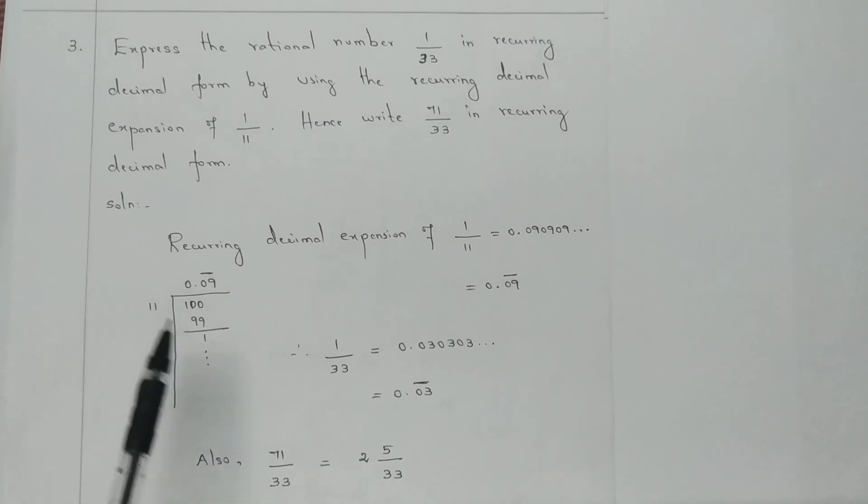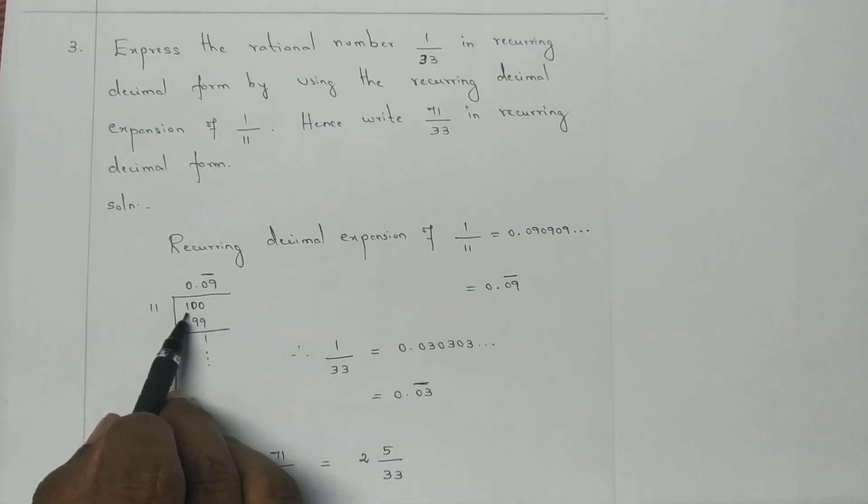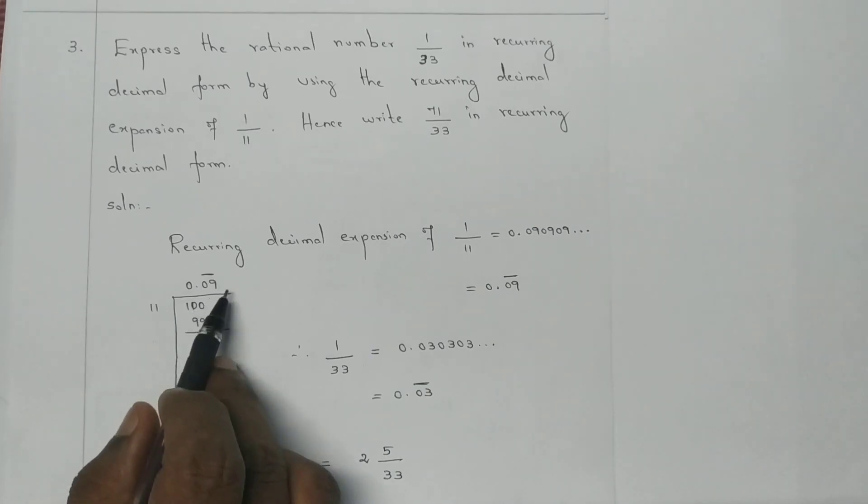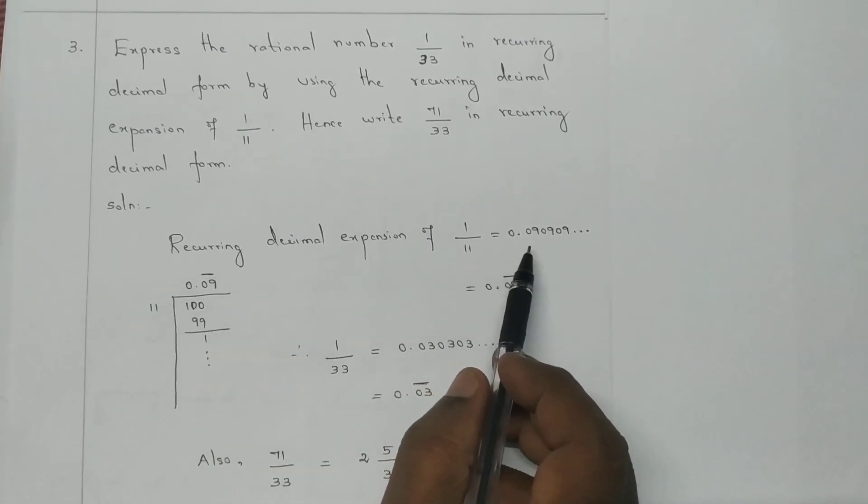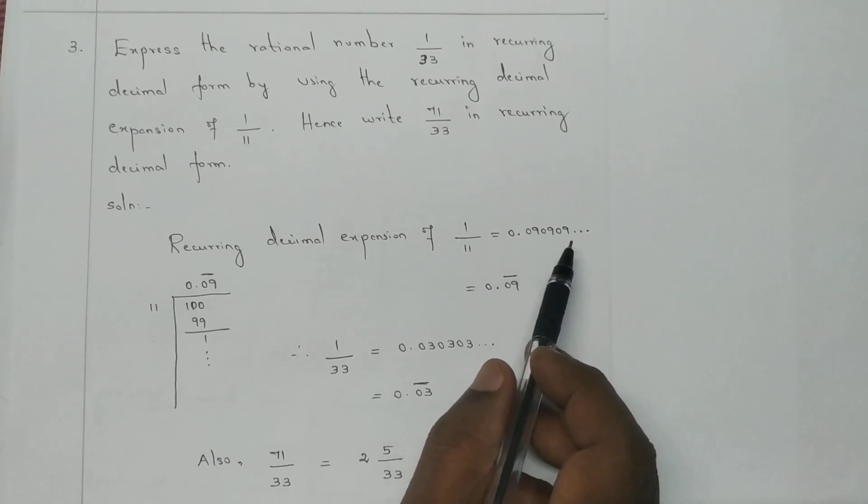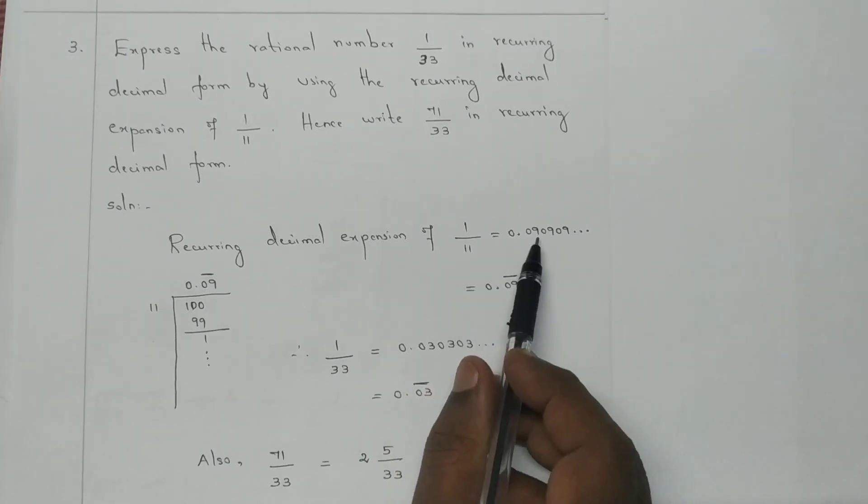1 divided by 11. 11 goes into 1, zero times. So 0.0... Then 100 divided by 11 is 9, with remainder 1. Then 99 divided by 11 is 9, with remainder 1 again. This pattern continues to give us 0.09 repeating. So 1/11 equals 0.09 bar.